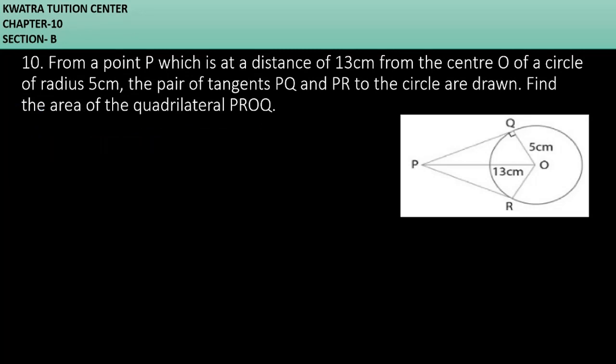Now moving to the tenth question. It says from a point P which is at a distance of 13 cm from the center O of a circle of radius 5 cm, the pair of tangents PQ and PR to the circle are drawn. Find the area of the quadrilateral PROQ. We have to make a quadrilateral area. As we know, the angle at the point of contact is 90 degrees. This one is 90, this one is 90 as well.